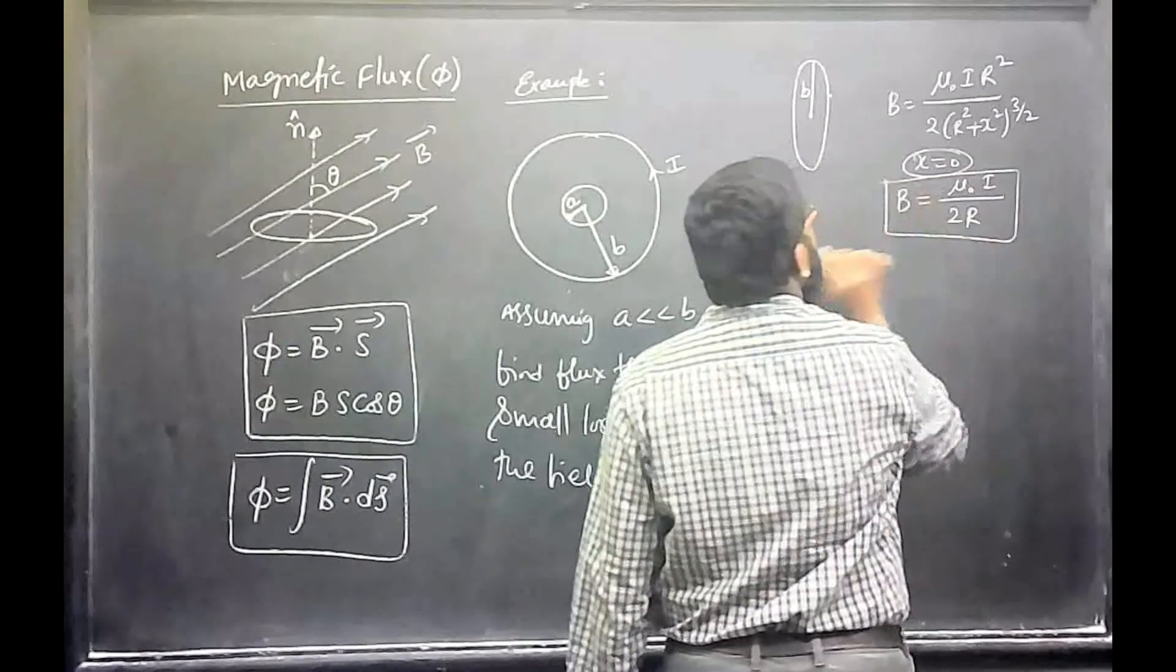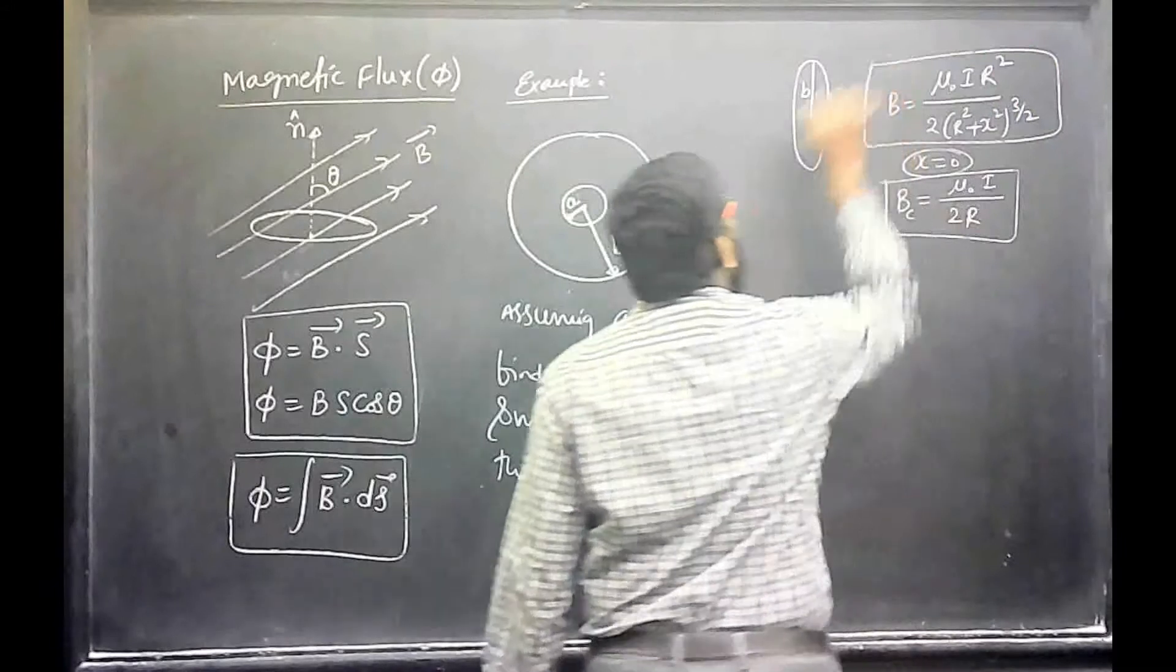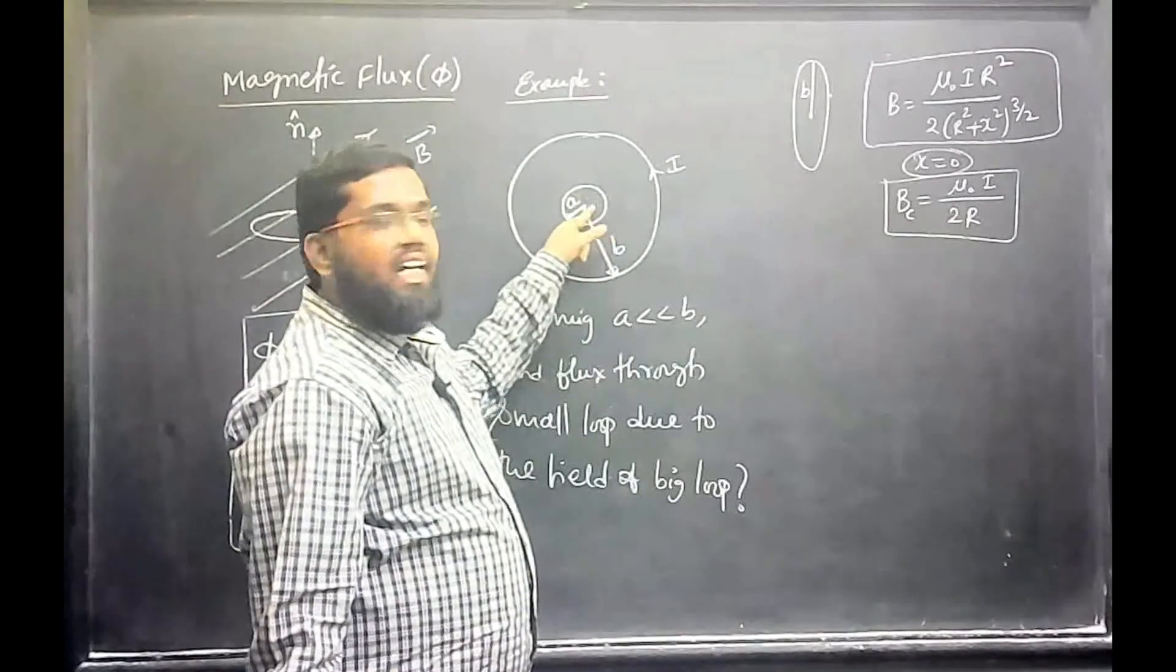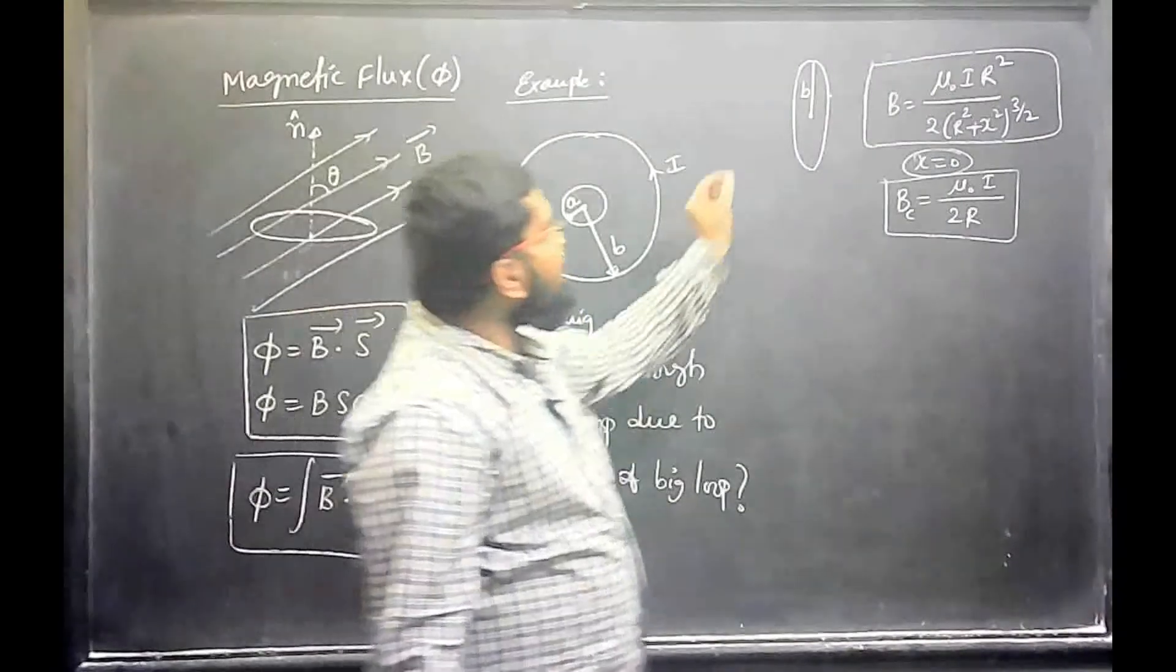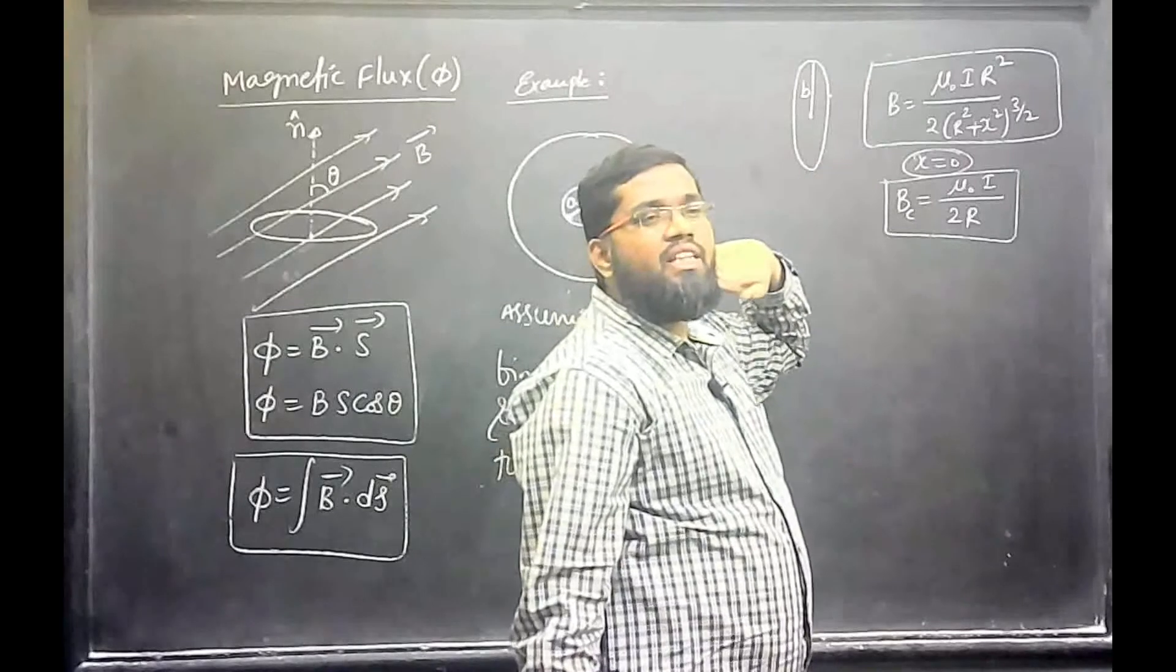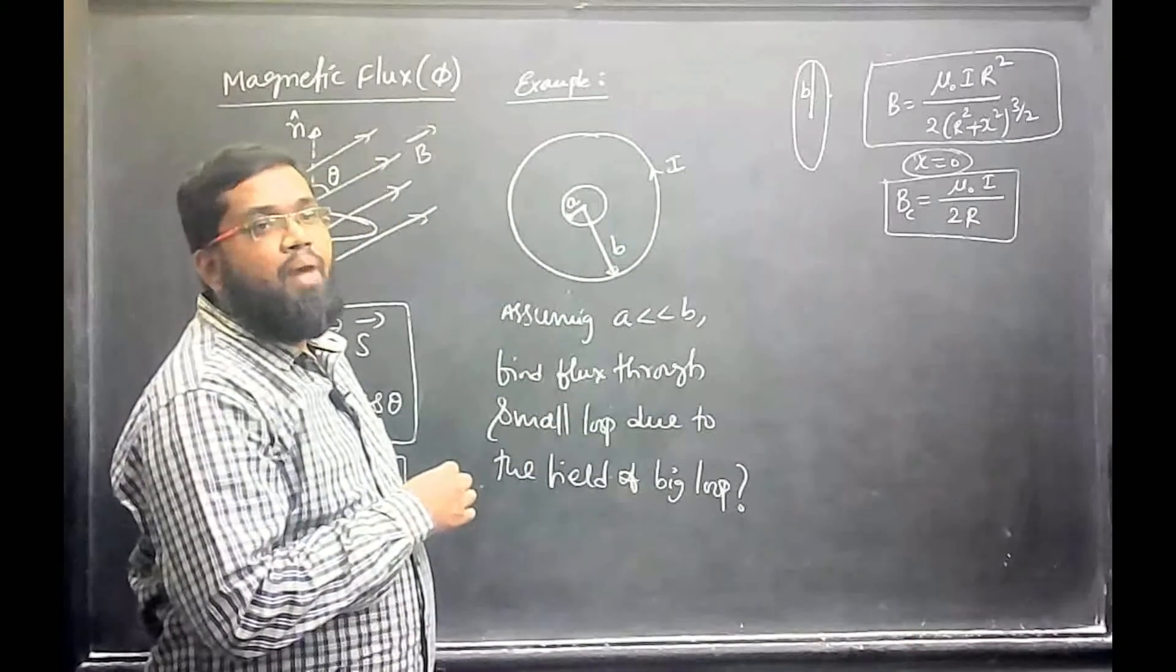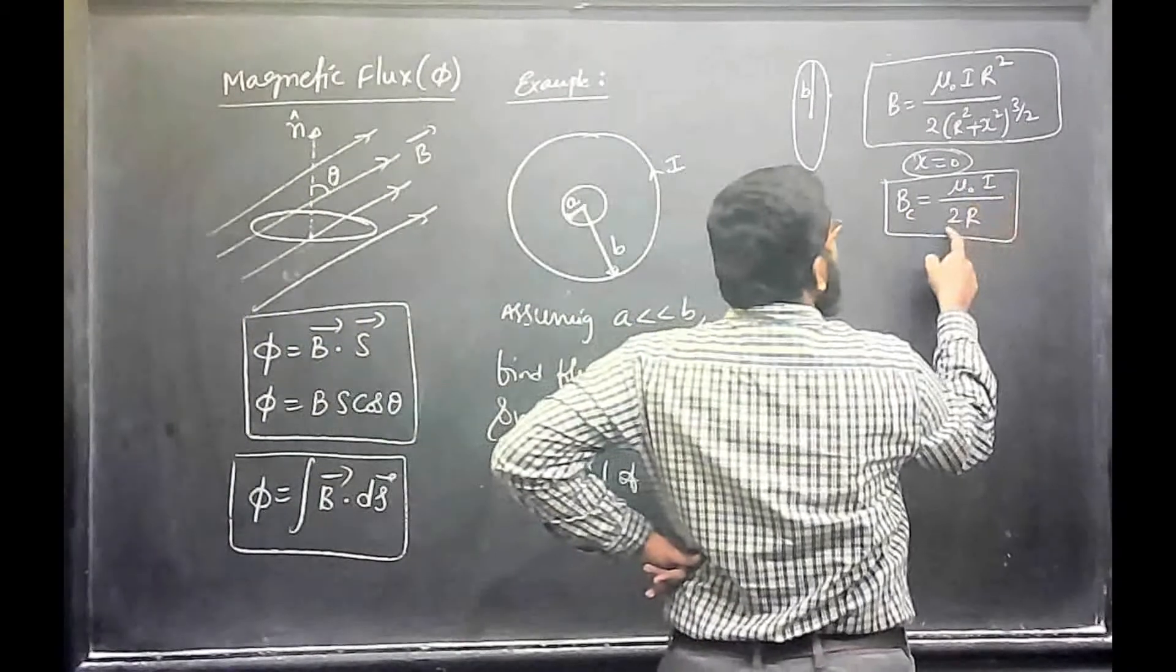This is the magnetic field at the center. This is the magnetic field at any point. If it is small, we can think of it is almost at the center, and magnetic field is uniform. So, at the center mu naught constant, I constant, 2 constant, R constant.